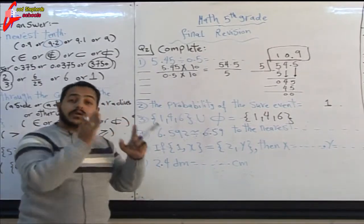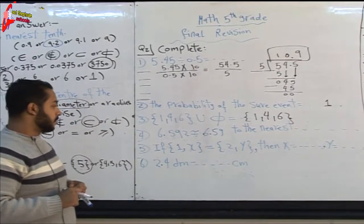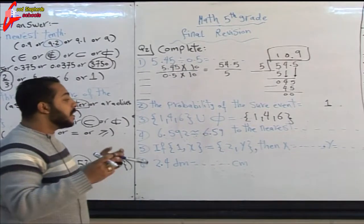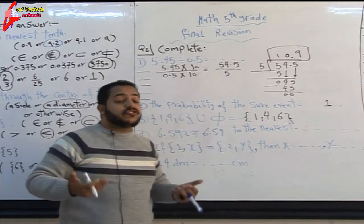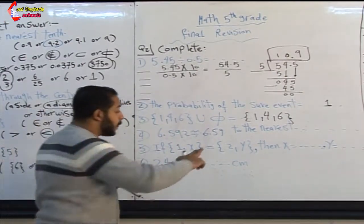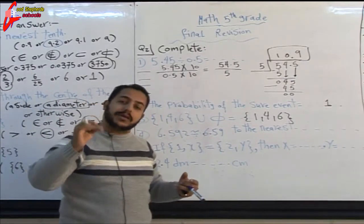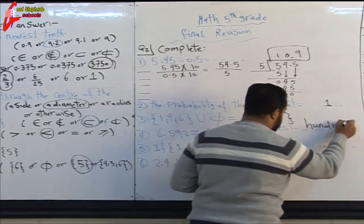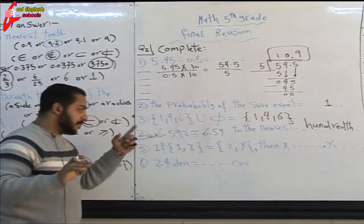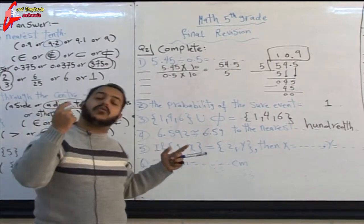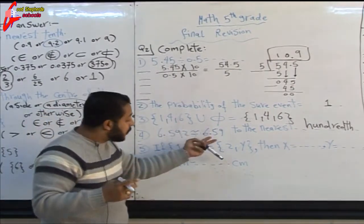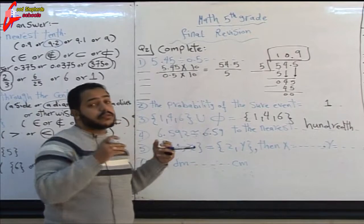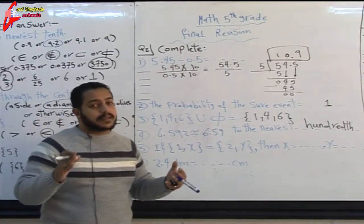Question four complete: 6.592 approximately equal to 6.59. He approximated to the nearest hundredths. Remember: if the result has one decimal place, he approximated to the nearest tenths. Two decimal places means nearest hundredths. Three decimal places means nearest thousandths.